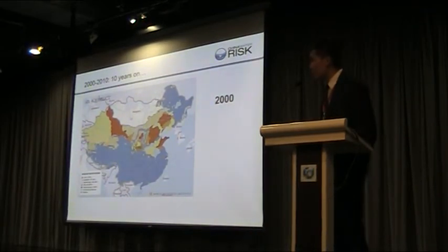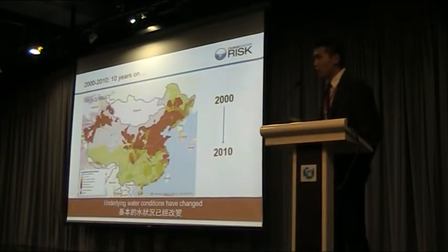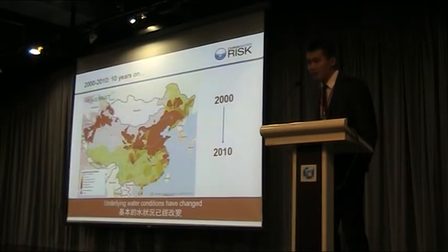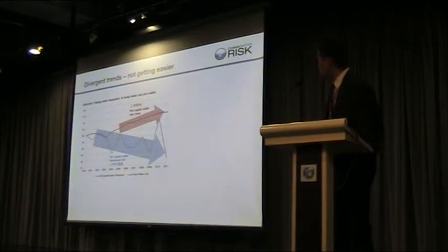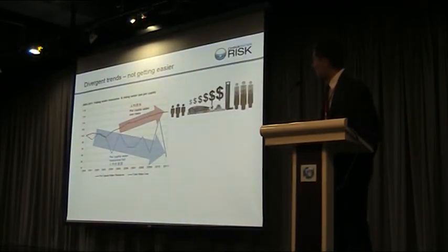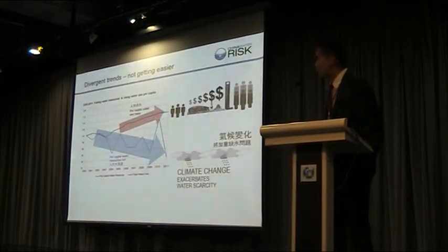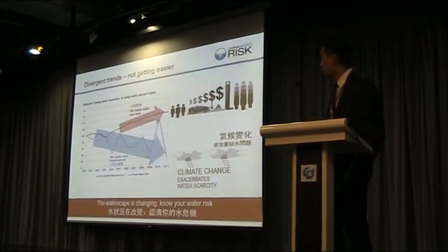Looking at the water pressure map: in the year 2000, China still had lots of blue color — indicating relaxed water resources — while red indicates high pressure on water resource availability. Over the last 10 years, there is no blue color left and most regions are in a non-red, high-pressure state. The underlying conditions have changed. Over the last 10 years, water resource per capita has been decreasing and fluctuating because of climate change, and water use has been rising. With increasing urbanization and economic growth, we expect this divergent trend to continue. Climate change is exacerbating water scarcity in China, and the water landscape has been changing.